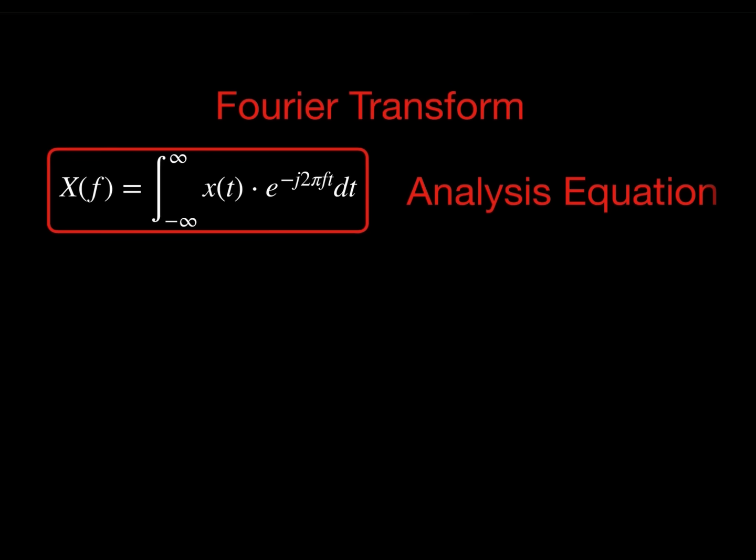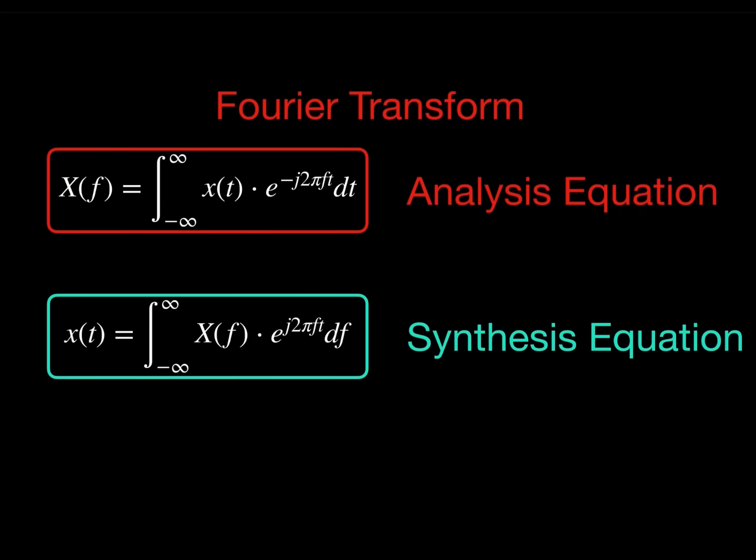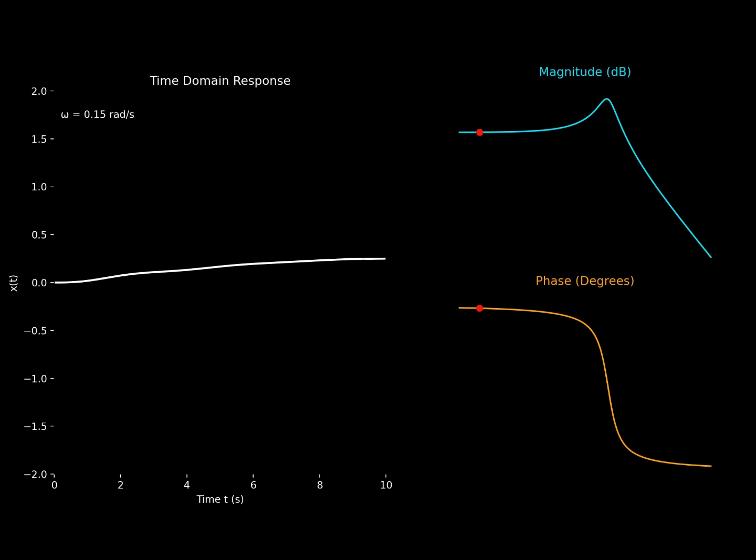Next, we will move on to the Fourier transform. The Fourier transform applies to non-periodic signals. The idea is that any signal can be made up of a summation of signals of different frequencies. This transformation allows us to see how much of each frequency component is present in a signal by giving an equation in terms of the frequency variable f.